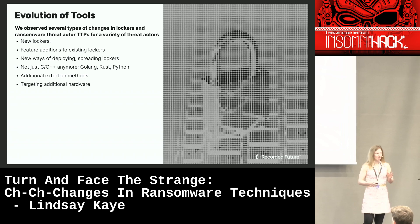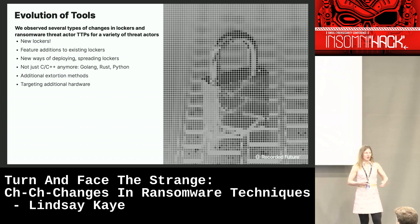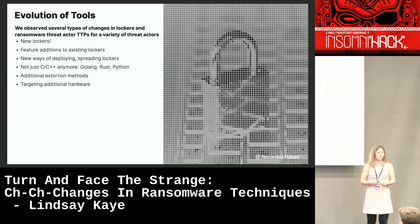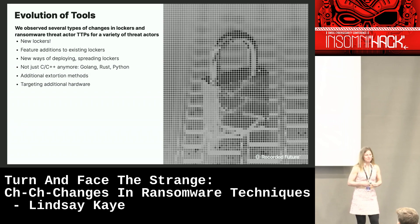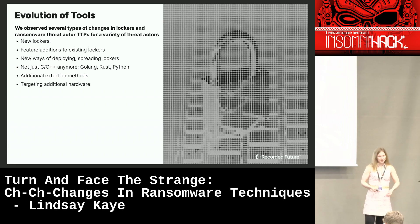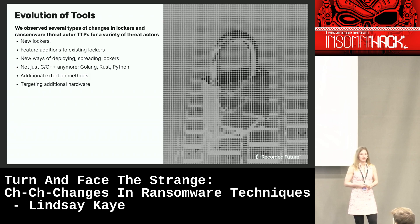Over the past couple of years, there are a couple of different categories of ways we've seen lockers evolve and ransomware actor TTPs change. Things like new lockers spin up and spin down, feature additions to existing ones, and new ways of deploying and spreading them. It's not just C and C++ anymore — now we've seen languages like Golang, Rust, and Python as well. We've seen additional extortion methods and some threat actors targeting additional types of hardware.